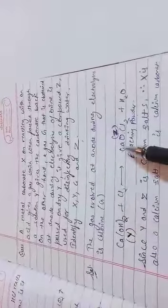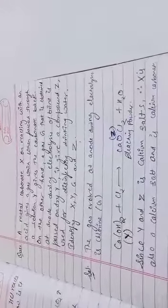Y and Z both are calcium compounds, calcium salts. It means X is also a calcium salt, and this is basically calcium carbonate. Because in this reaction, a metal X on reacting with acid gives a gas which when passed through solution Y gives the carbonate back. Calcium carbonate reacts with acid, gives CaCl2 plus CO2 plus H2O, and when this gas is passed through Y, it gives calcium carbonate back. That's why X is CaCO3.